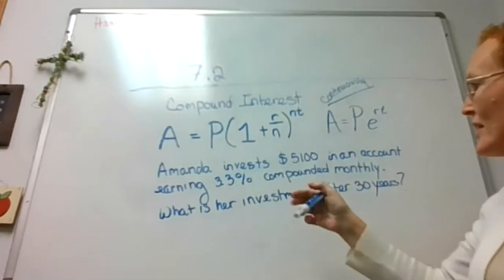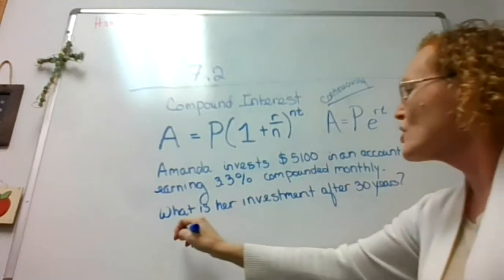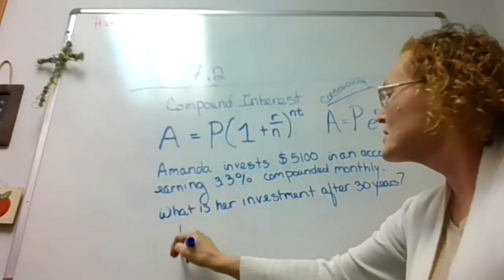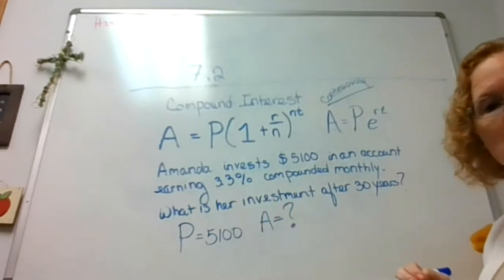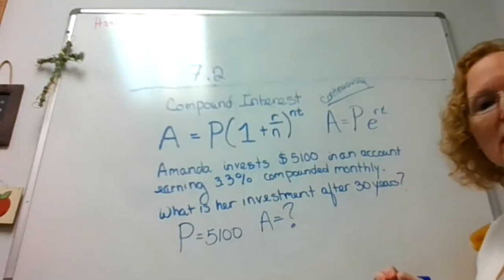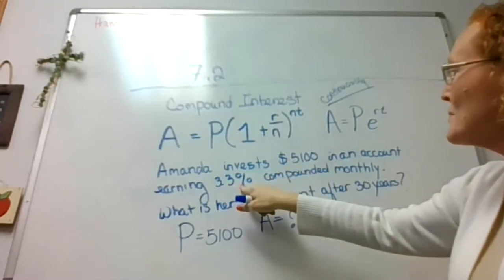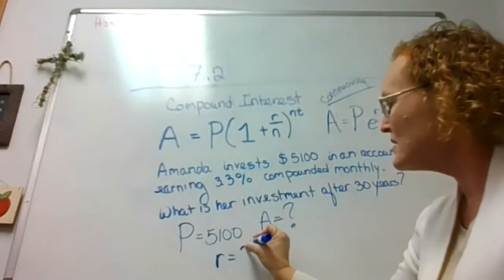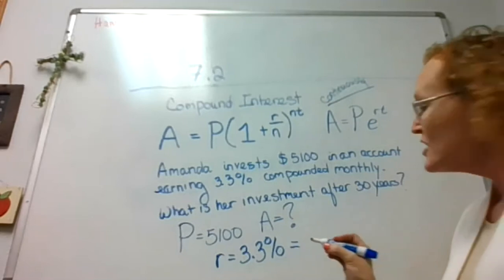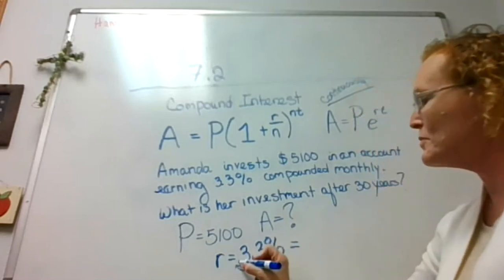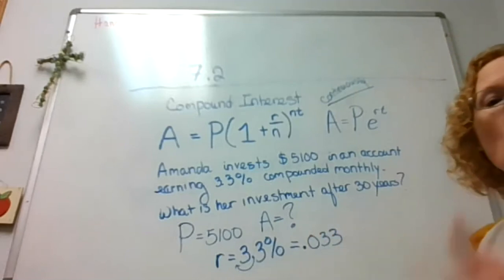So we're going to use this formula. Now I want to label everything. Amanda invests $5,100 — so that's P, the principal: P = 5,100. A is a question mark — that's what we're looking for. Earning 3.3% — that's my interest rate R, but remember we always have to put it in decimal form. Moving two places to the left: one move puts it right in front of the 3, so I need to add a zero — we'll be plugging in 0.033. Don't drop that last digit just to round — leave all of it in there.